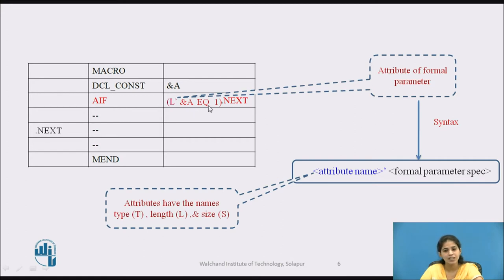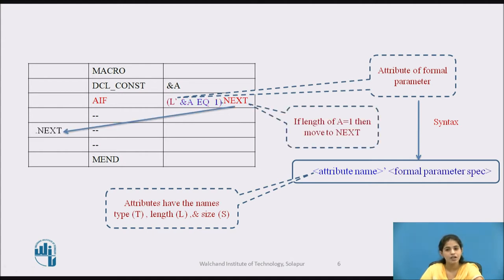If this condition is true, then control is transferred to the sequencing symbol .NEXT. When &A has a length equal to 1, the control is transferred to the .NEXT sequencing symbol.